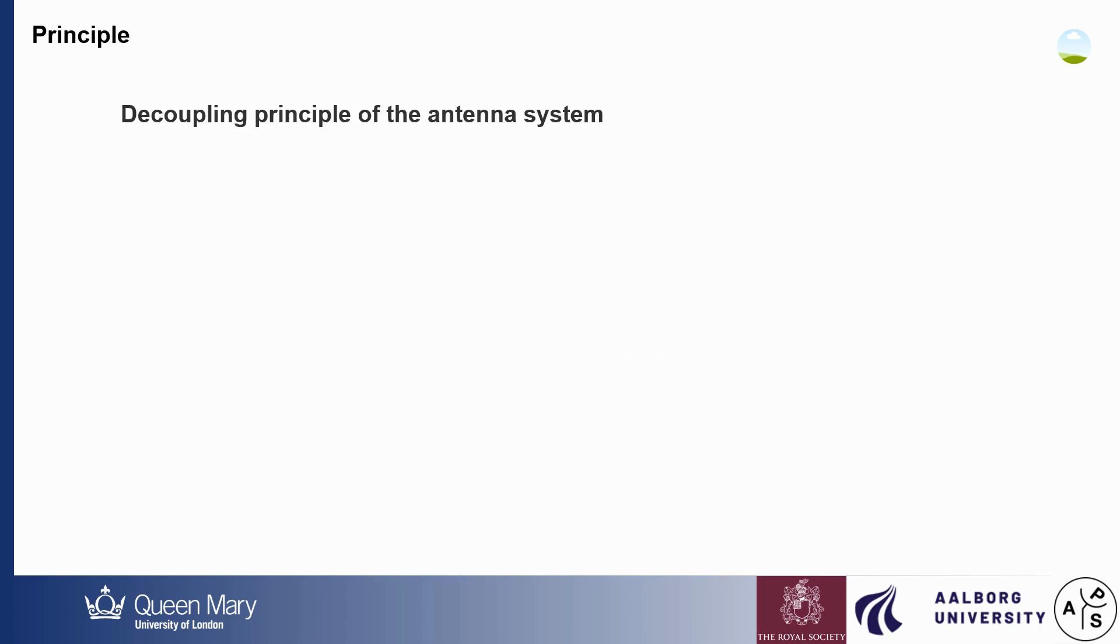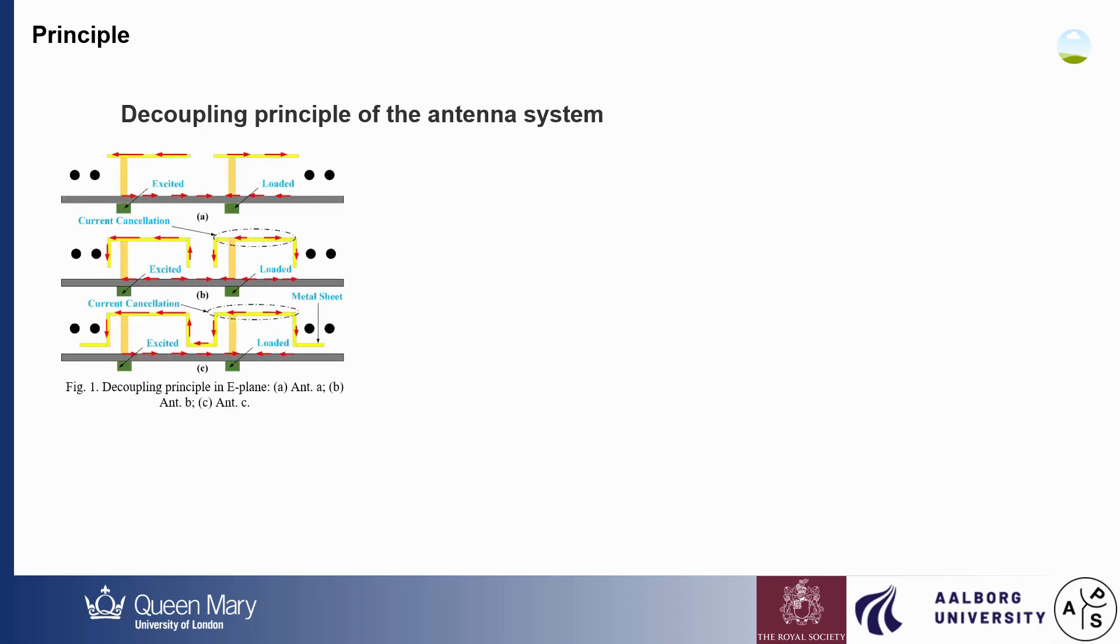For example, as shown in Figure 1, the patch antenna only excites the horizontal current on the patch, and the adjacent units also induce the horizontal current, resulting in strong coupling.